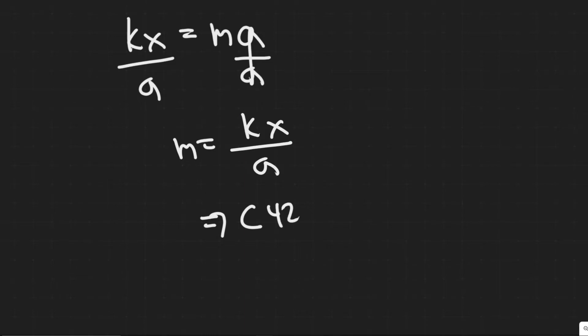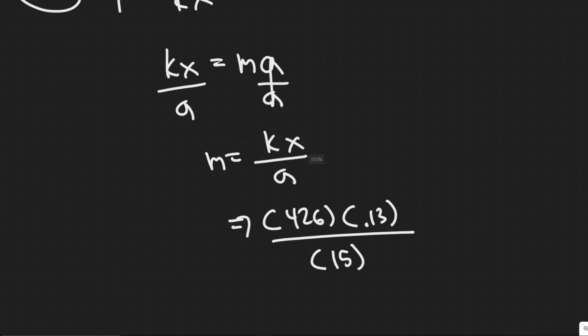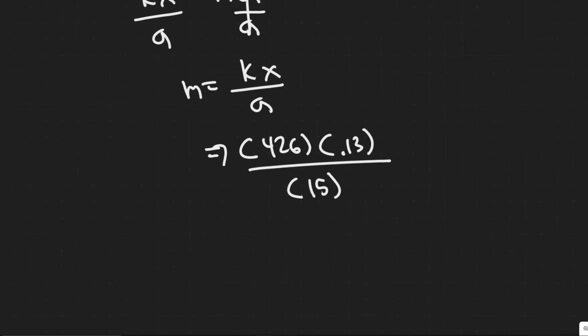So K we said was 426, and then x was 0.13, or the distance compressed, divided by the max acceleration, which was 15. So let me go ahead and plug this in. So when you do this, you're going to get a value equal to 3.69.